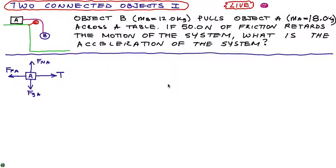Now, we need to decide on direction here. And as a general rule, what I do is I always make the direction of motion the positive direction. So since A is moving to the right, I'm going to call to the right positive. And that's what I recommend you do.